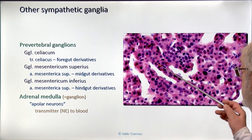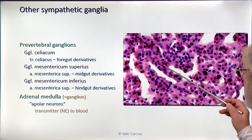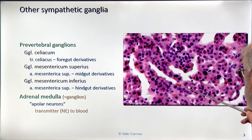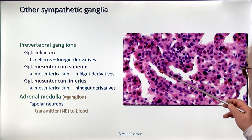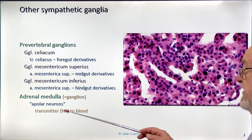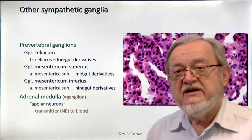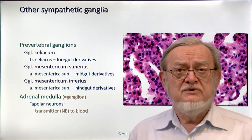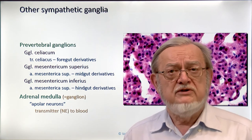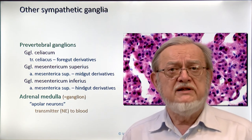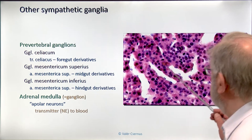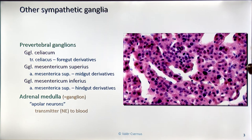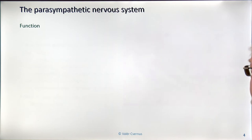Because these cells have no axon, they do not send norepinephrine far away; instead they empty it nearby into large capillaries — the sinuses — which pick it up and increase the norepinephrine level of the blood. So this is a kind of combination of neural tissue and endocrine tissue, but technically it is neural tissue: a ganglion made of apolar neurons.